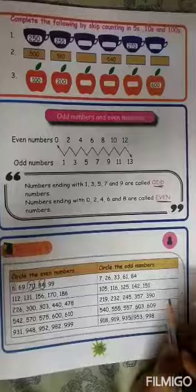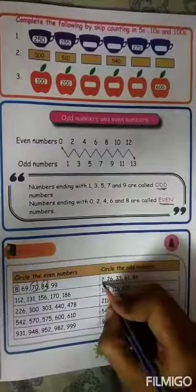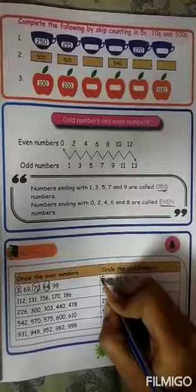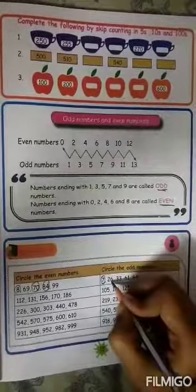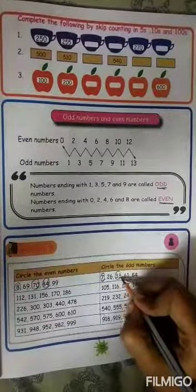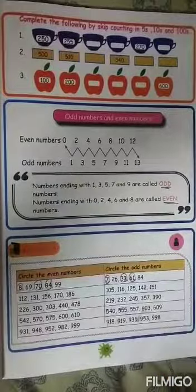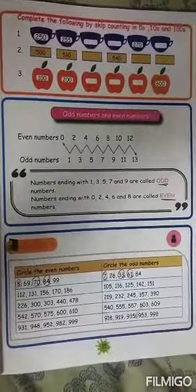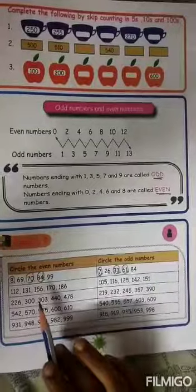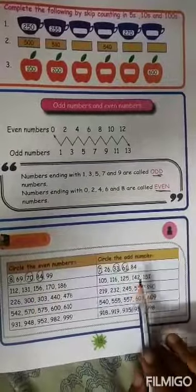Here circle the odd numbers. Numbers ending with one, three, five, seven and nine are odd. Seven is an odd number. Six in ones place — not odd. Three in ones place — odd number. One in ones place — odd number. Four in ones place — not odd. So encircle the odd numbers accordingly.